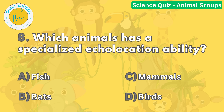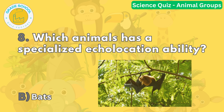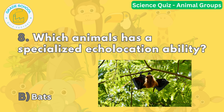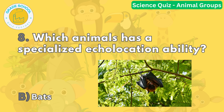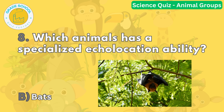Question number eight. Which animal has a specialized echolocation ability? The correct answer is letter B. Bats, which are mammals, have the unique ability of echolocation. They emit high-frequency sounds that bounce off objects, allowing them to navigate and find prey in the dark.